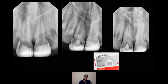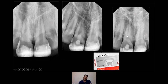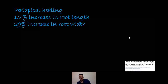Here's another regenerative case done with Biodentine, using a collagen barrier to avoid packing the material too far into the canal. The root thickened and the apex closed off. Looking at the Mahidol study, it shows that with regenerative treatment we get periapical healing, with a 15% increase in root length and a 29% increase in root width on average.